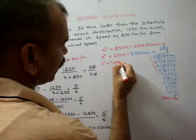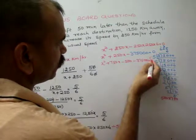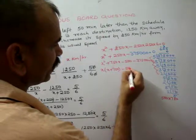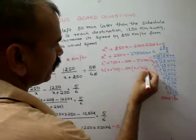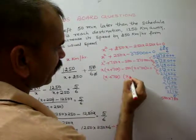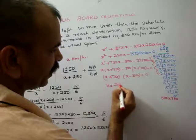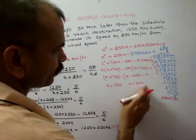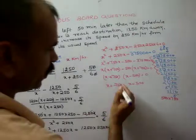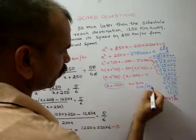Factoring the quadratic: x² + 750x − 500x − 375000 = 0, giving (x + 750)(x − 500) = 0. So x = −750 or x = 500. Since speed cannot be negative, we ignore −750. Therefore the usual speed is x = 500 km per hour.